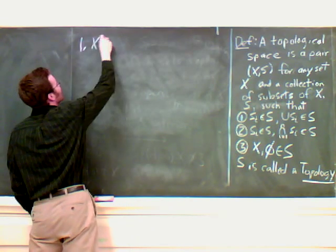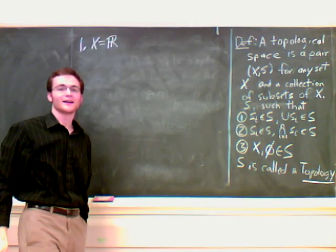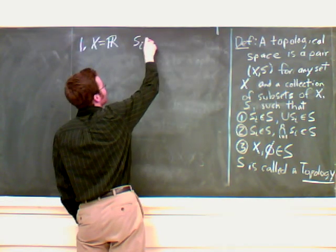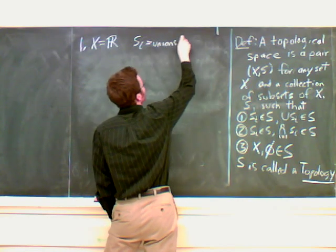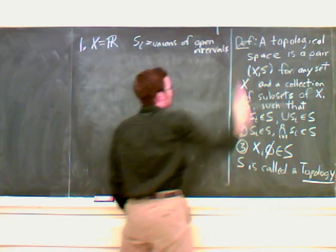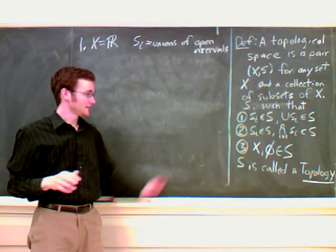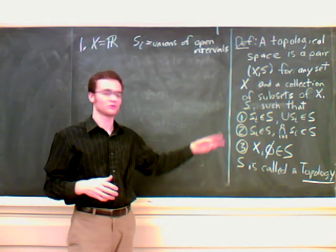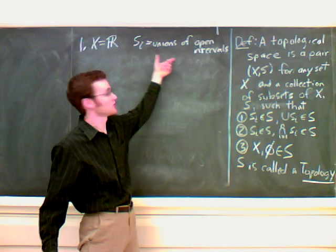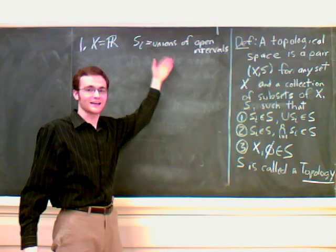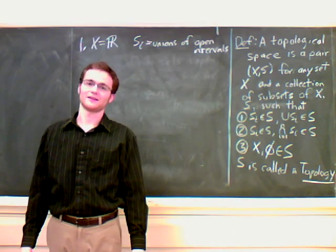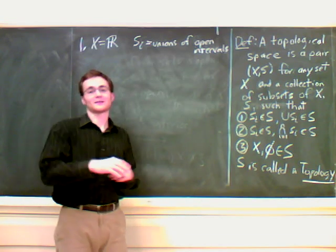Example one, the real line. Here, we do exactly what we did before, where the things in S, S_i, are unions of open intervals. Let's make sure it follows these three rules, these three properties, to make sure that this S is in fact a topology. If we take these S_i, which are unions of open intervals, each element, each open set, is a union of open intervals. We take their union, and it's still a union of open intervals, which is what we talked about in the last lecture.